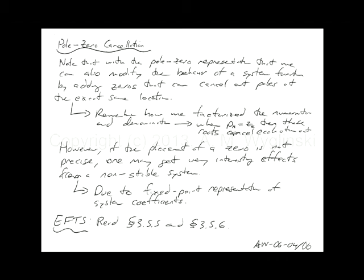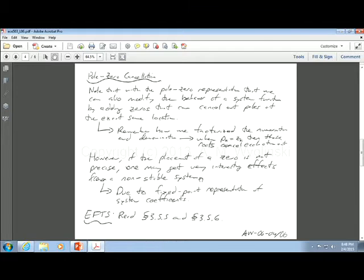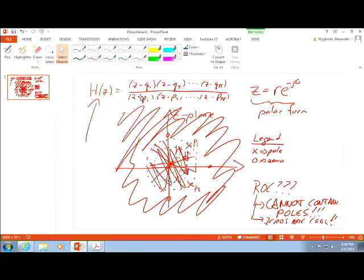Last but not least, pole zero cancellation. So what it turns out, what happens if you have a root in the numerator and a root in the denominator, and they're identical? They'll cancel out. So we go back to that form. What happens if Q1 is equal to P1? You cross it out.